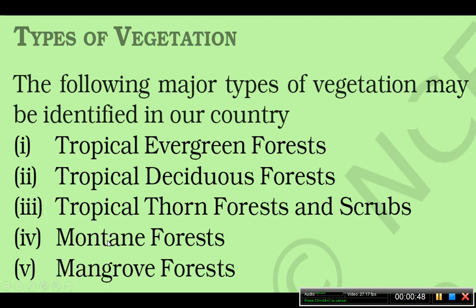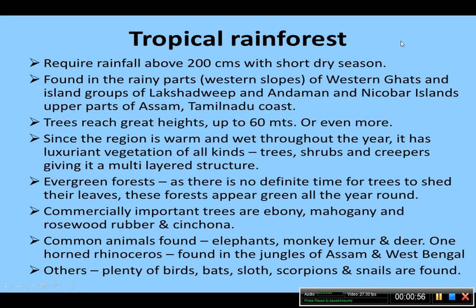Tropical rainforest requires rainfall above 200 centimeters with a short dry season. It is found in the rainy parts — the western slopes of the Western Ghats, island groups of Lakshadweep and Andaman and Nicobar Islands, upper part of Assam, and Tamil Nadu coast. Trees reach great heights, up to 60 meters or even more.